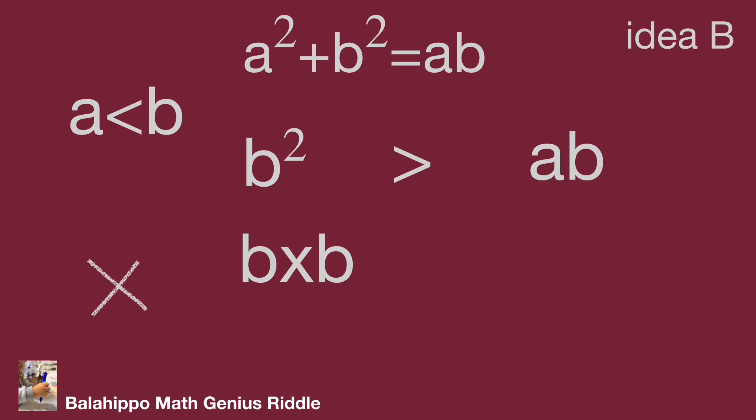In these three scenarios — a equals b, a greater than b, and a less than b — we have proved that a squared plus b squared is not equal to ab, so there are no positive integer solutions.